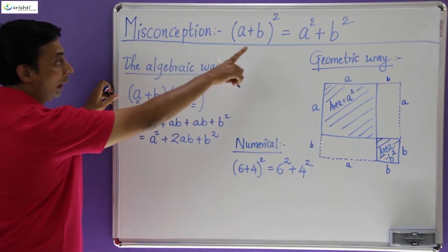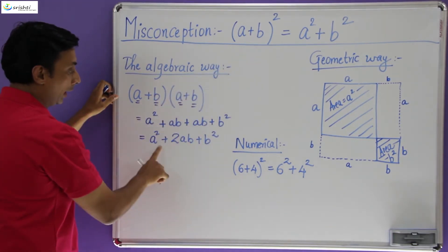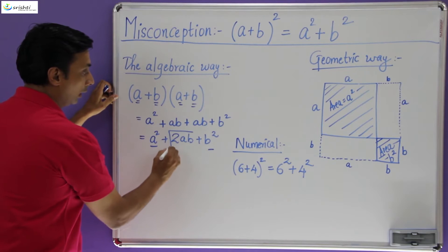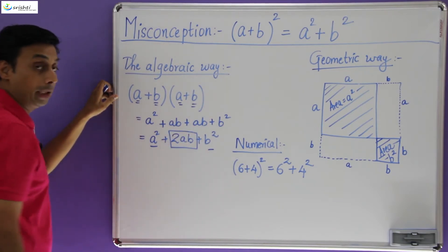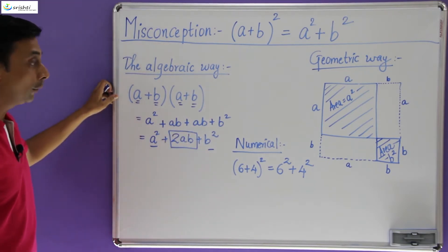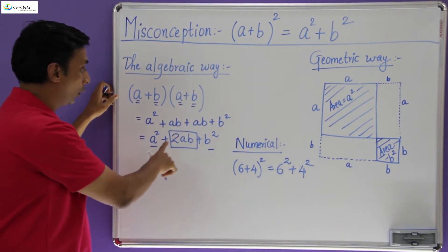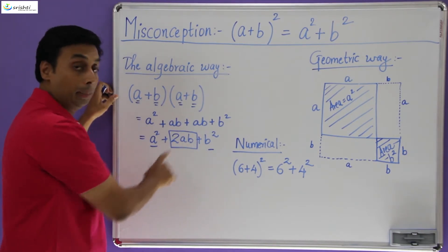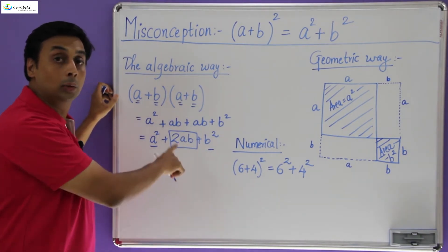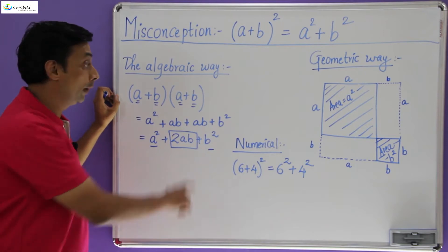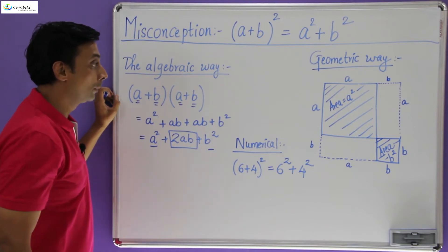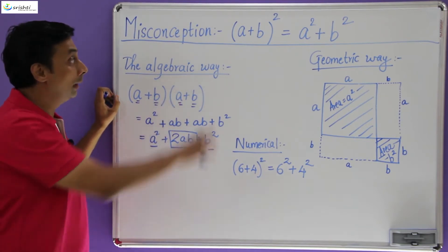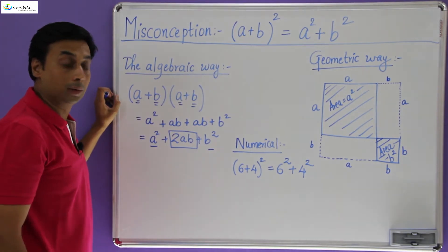Do you notice that in addition to a² + b², there is an additional term which is 2ab, and therefore (a + b) whole square is actually a² + b² + 2ab. This 2ab is the additional term which you are missing. This is the algebraic way of showing that this particular formula is correct.